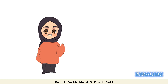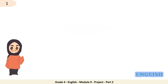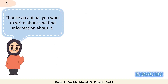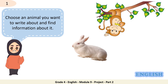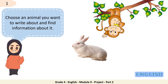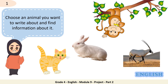Now, it's time to go over some writing tips whenever you want to write about your favorite animal. Follow with me. Writing tip number 1: choose an animal you want to write about and find information about it. Maybe you'd like to write about the rabbit, monkey, cat, or even the oryx.